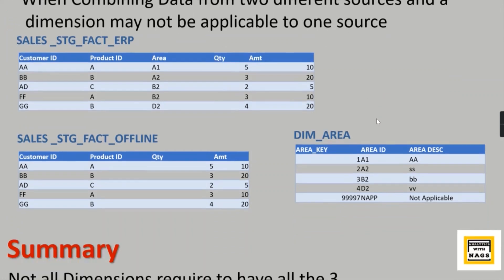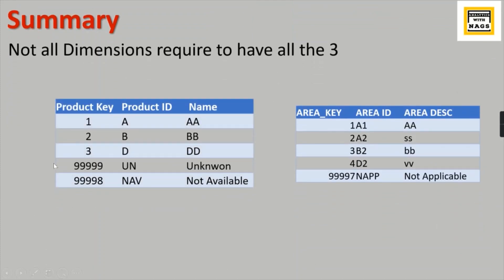In summary: unknown, not available, and not applicable are the extra entries you need to manually add in dimensions. Whichever dimensions you pre-assume may have these issues — and the business knows these kinds of issues will arrive — you add them to those dimensions. It is not a good practice to add them to all dimensions, because if you have hundreds of dimensions, not all will have these issues. For unknown: after lookup, if you get a blank result, use the unknown key. For not available: before lookup, if values in the fact table are blank, replace them with NAV, then do the lookup to get the surrogate key.